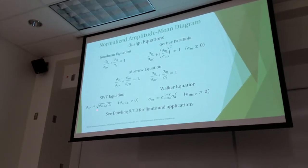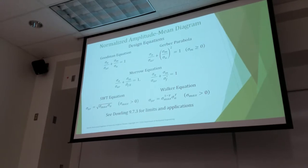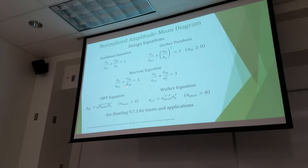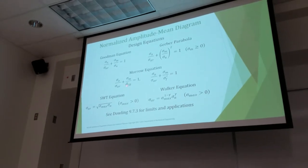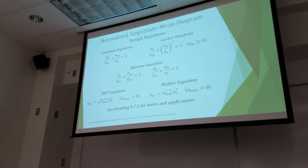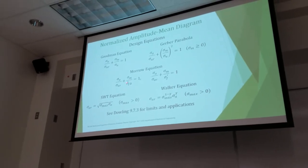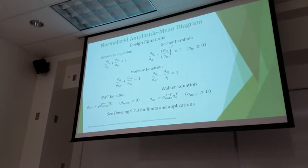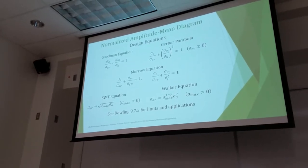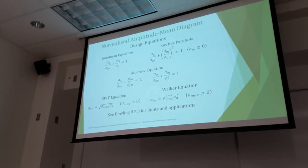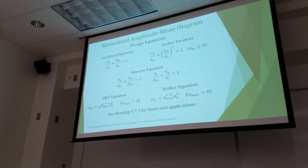This one has your true fracture strength as a material property — the Morrow equation. How easy is it to find that? In Dowling it's tabulated, but for a lot of materials it's not. Tensile strength — that's why Goodman is so popular, because tensile strength is so readily available.